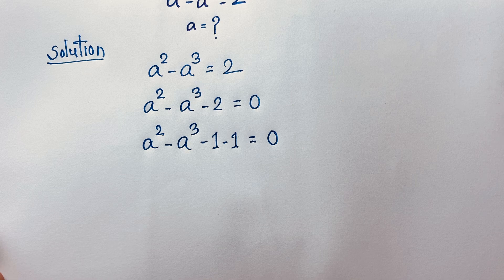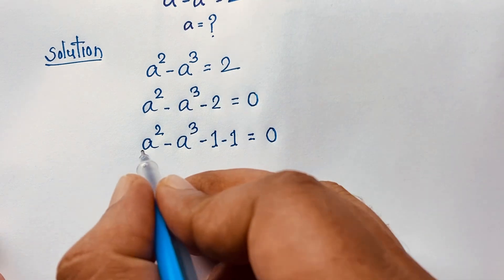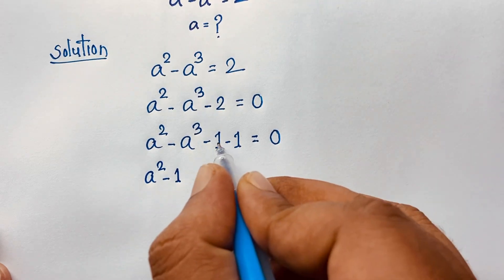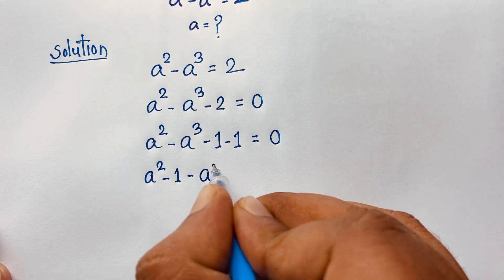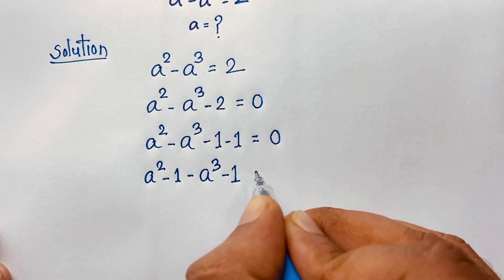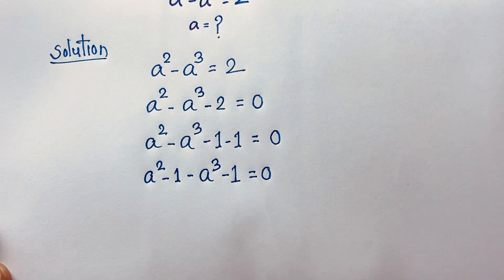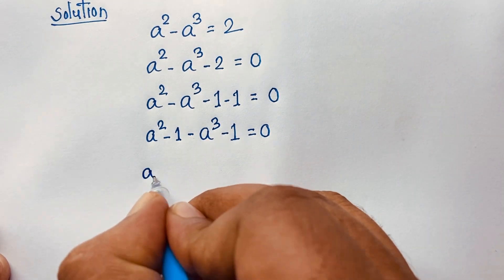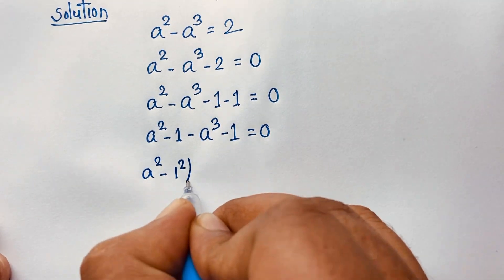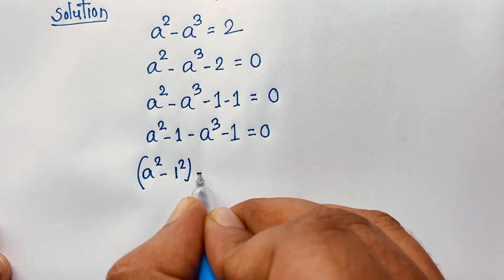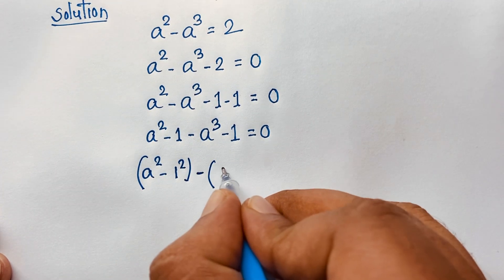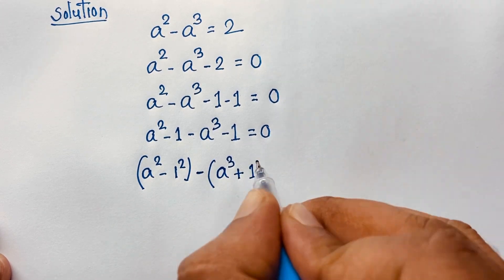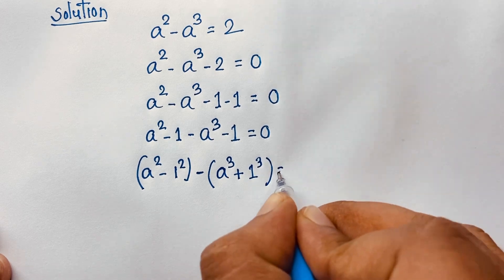Now I can group this expression as: a squared minus 1, and then minus a to the power 3, and I take the negative 1 together, giving us (a squared minus 1) minus (a cubed plus 1) is equal to 0. Note that 1 squared is 1 and 1 cubed is 1.